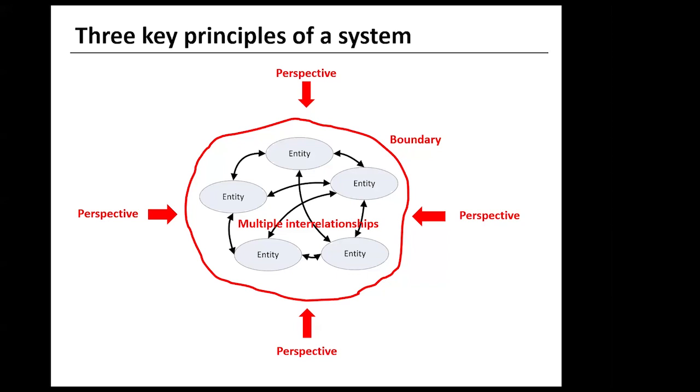Note that these principles are closely connected and influence each other. Our perspectives will inform interrelationships we see, and this will have an impact on boundary judgments we make. No boundary judgment is absolutely correct. What is important to understand is why we make the judgment that we do.